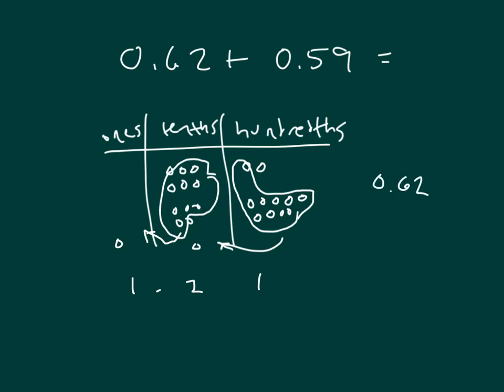Let's write this numerically. Line up our place values. 2 hundredths and 9 hundredths is 11 hundredths. 1, regroup a 1. 1 plus 6 plus 5 is 12. 2, regroup a 1. And a 1 in the ones place.